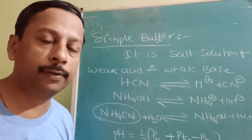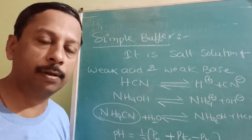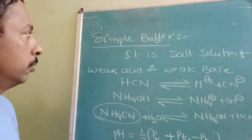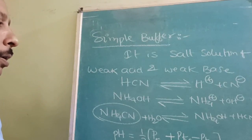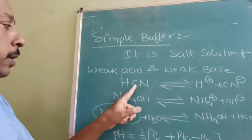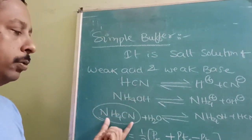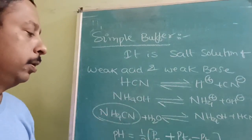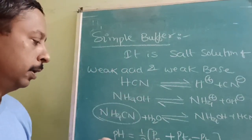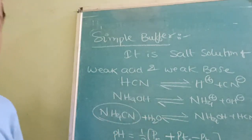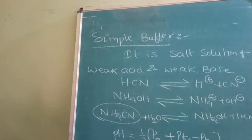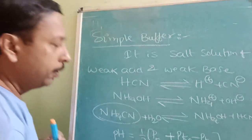So how to find out the pH of that buffer — simple buffer is a salt solution of weak acid and weak base. This solution acts as a buffer because no concentration term is available in the pH formula. The pH is constant because those equilibrium constants are fixed for the given acid and base.